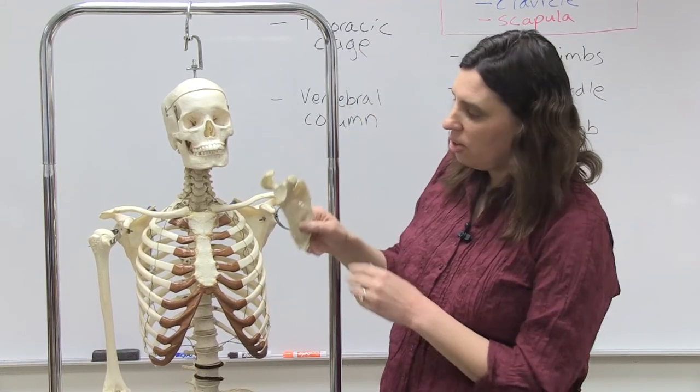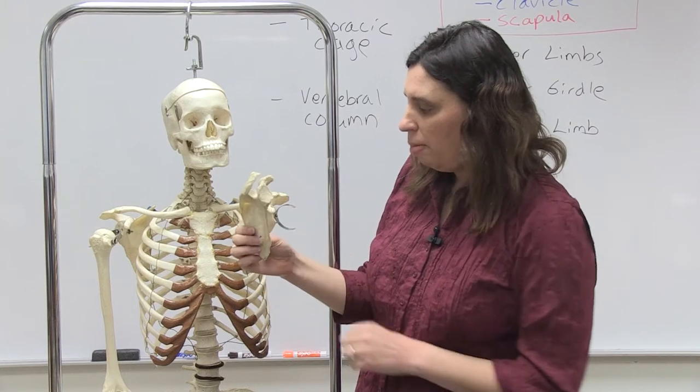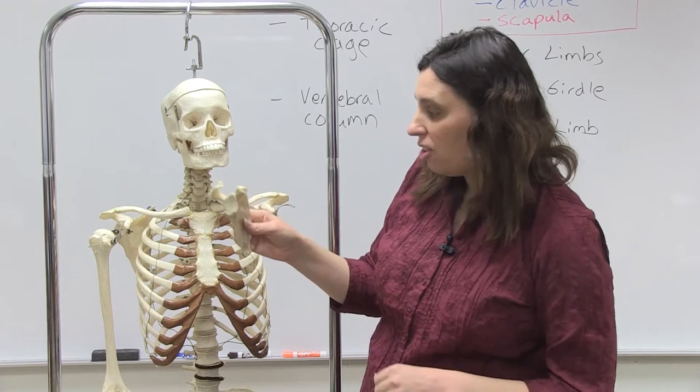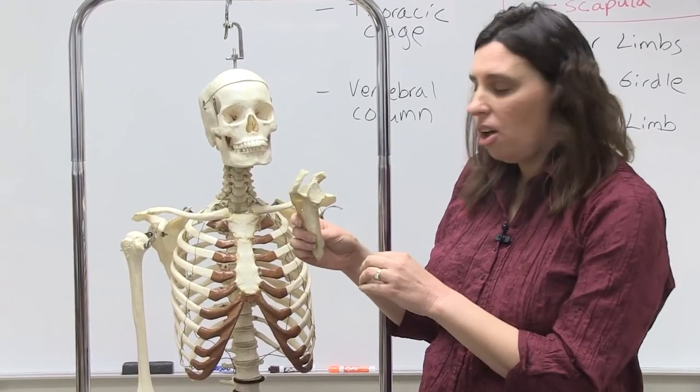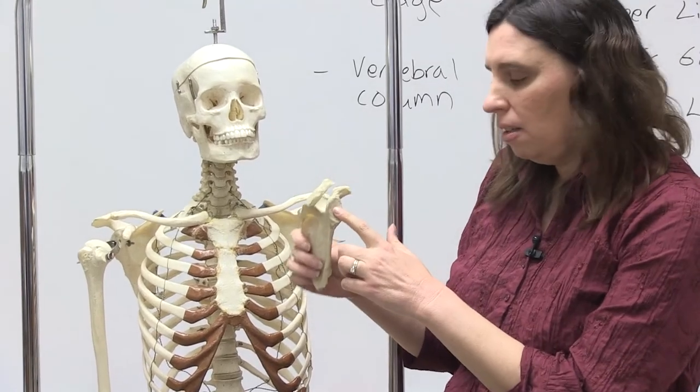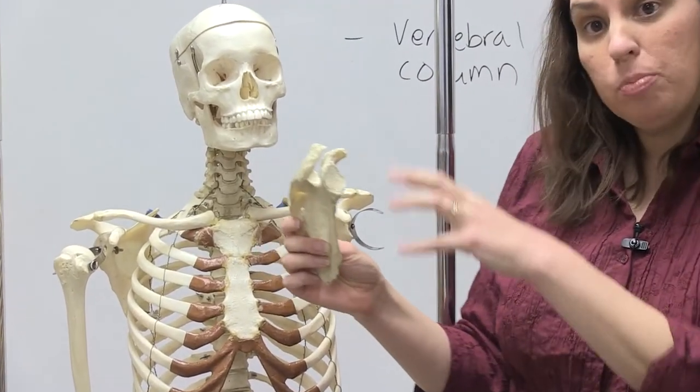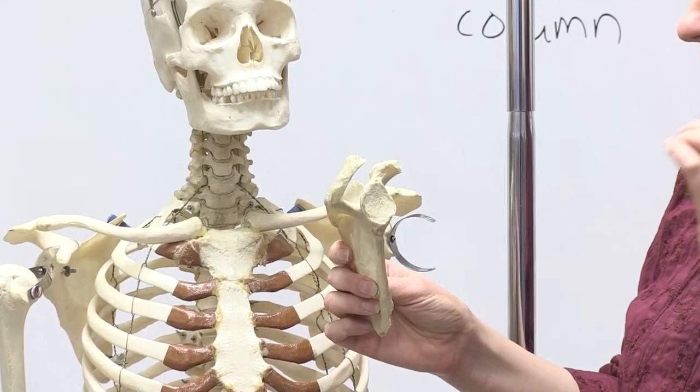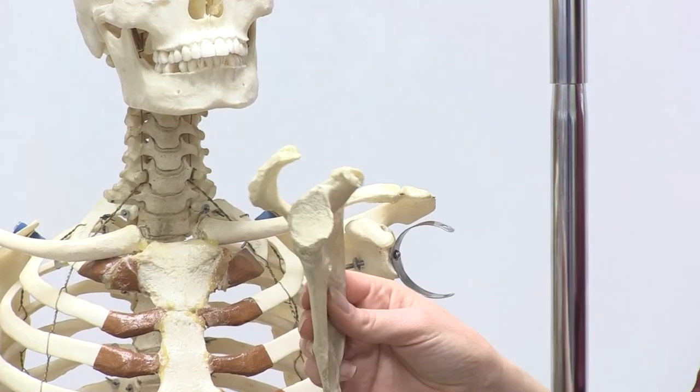Now, one thing you have to keep in mind is, once again, orientation. And you'll notice that the last feature that I really wanted to mention today was a shallow depression. And this is actually on the lateral side of the scapula, and this is called the glenoid cavity. Now, the glenoid cavity doesn't look like much of a depression. It is pretty shallow.